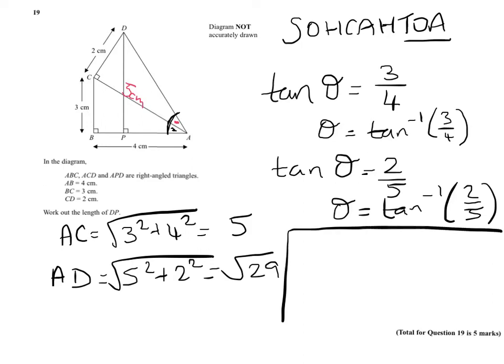We now need to use this value in trying to work out the length of DP. So basically, we have opposite, which is DP, and we have hypotenuse, DA or AD, because we've just worked it out. So therefore, we use sine.